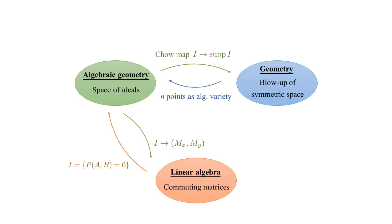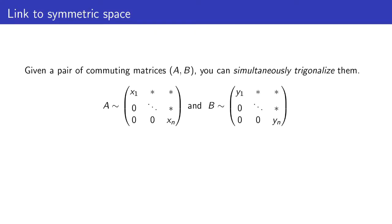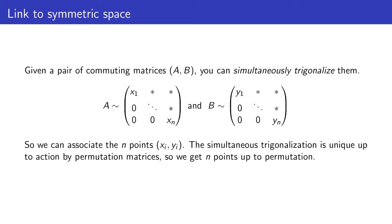We have seen the link between the space of ideals and the space of commuting matrices. It is also possible to directly see the link between the symmetric space and the space of matrices. Whenever I have two commuting matrices, I can simultaneously triangularize them, putting them in upper triangular form simultaneously. Writing the two matrices in this upper triangular form, I take the pairs of diagonal entries as coordinates of n points of the plane. The writing in upper triangular form is unique up to permutation, giving n points of the plane up to permutation — precisely a point in the symmetric space. Conversely, for n distinct points of the plane, I can associate two diagonal matrices with the x and y coordinates on the diagonal.